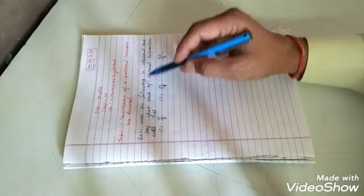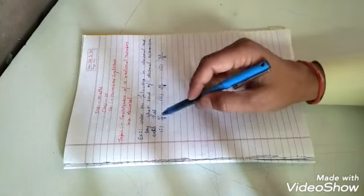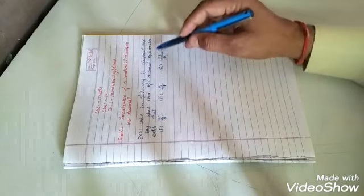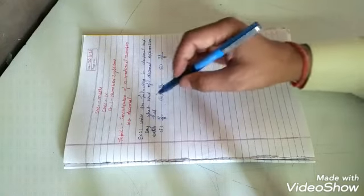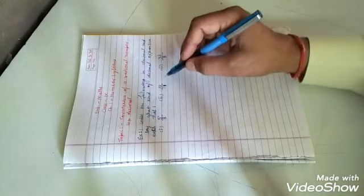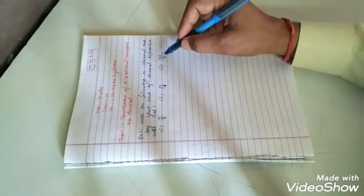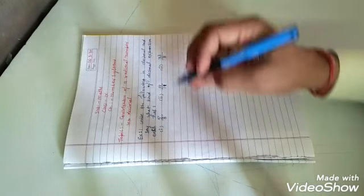Example. Write the following in decimal and see what kind of decimal expansion each has. First part: 5 upon 8. Second part: 14 upon 11. Third part: 33 upon 8.